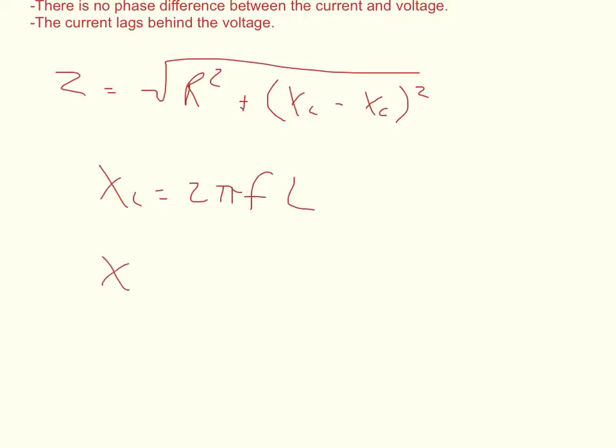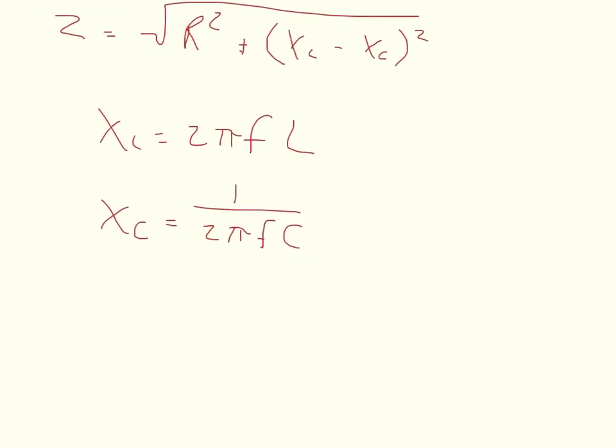The capacitive reactance is equal to 1 over 2 pi times the frequency times the capacitance. And so that gives us a formula of the impedance is equal to the square root of the resistance squared, plus 2 times pi